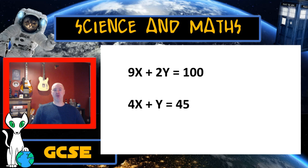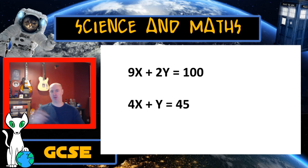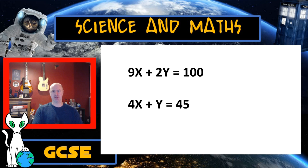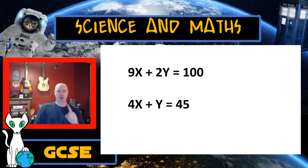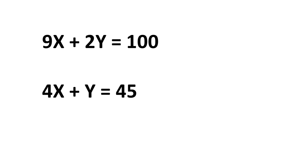Now I'm going to give you the opportunity to do one of these for yourself, but this time using the standard x and y you'll see in your textbook. So: 9x plus 2y equals 100; 4x plus y equals 45. Wind back the video, follow the steps I took, and I'll catch you in about 20 seconds to see if you've got the right answers for x and y.